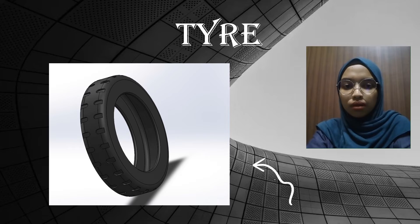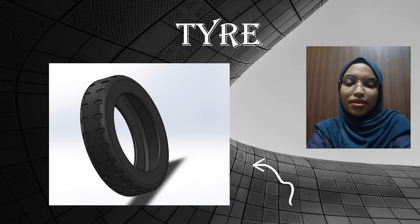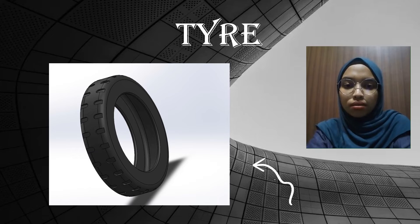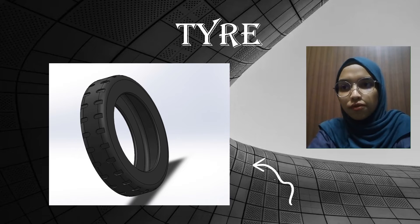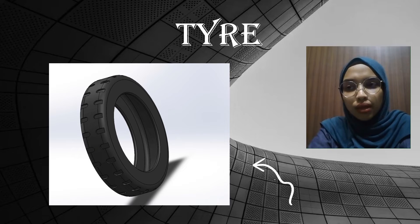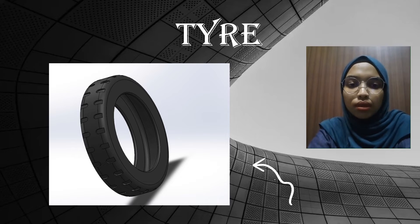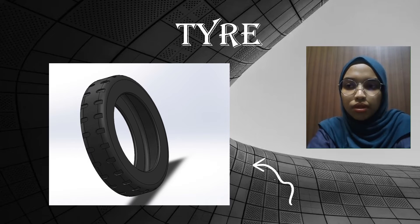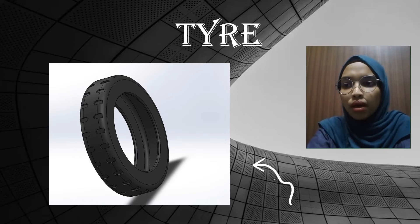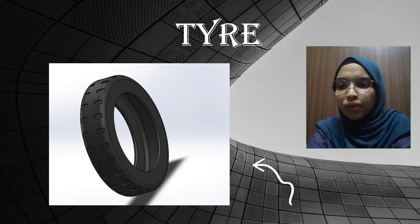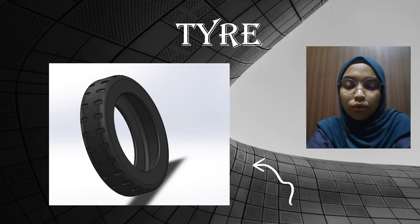My name is Nurish Azni binti Aminuddin, J2080604. My part is the tires. First, choose the front plane, then select the center line and draw vertical and horizontal lines. Then select a curve line to draw between the vertical lines. After that, the two curve lines and vertical line are made symmetrical. The next step is to select smart dimension — the smart dimension of the curve line and horizontal line is 50mm, while the horizontal line is 75mm.